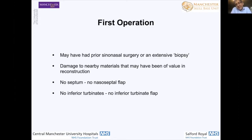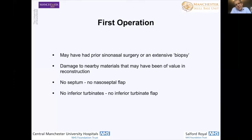If this is a first operation, a patient may have had prior sinus surgery or an extensive biopsy. Nearby materials that you may have used could have been destroyed or used in that first reconstruction. I'm thinking about the posterior septum — are inferior turbinates available? Can you harvest from both sides of the nose, a flap from one side and an inferior turbinate from the other, to augment some sort of reconstruction?